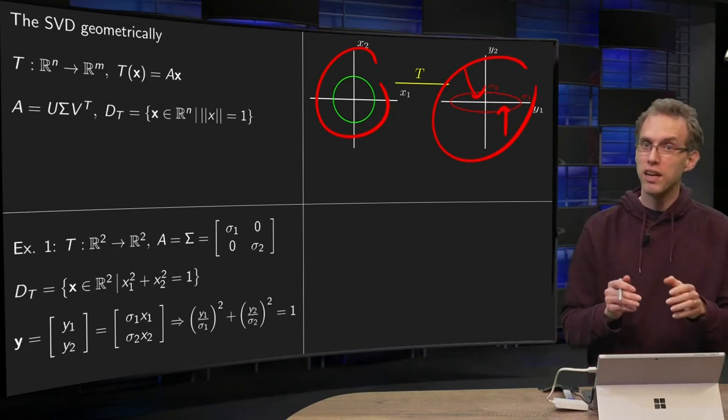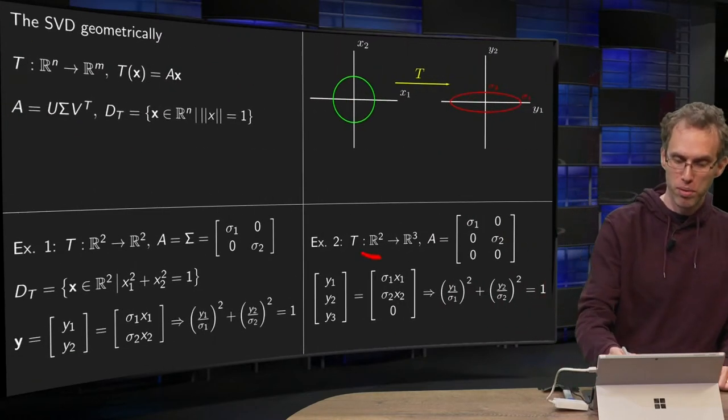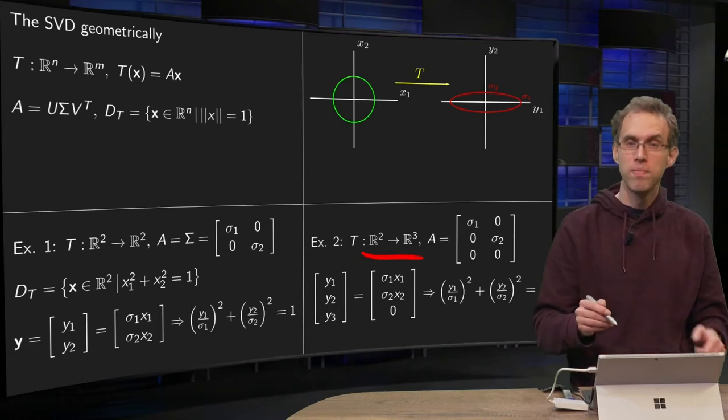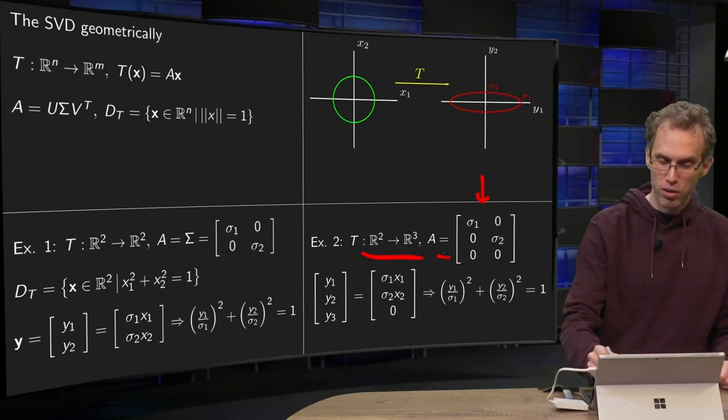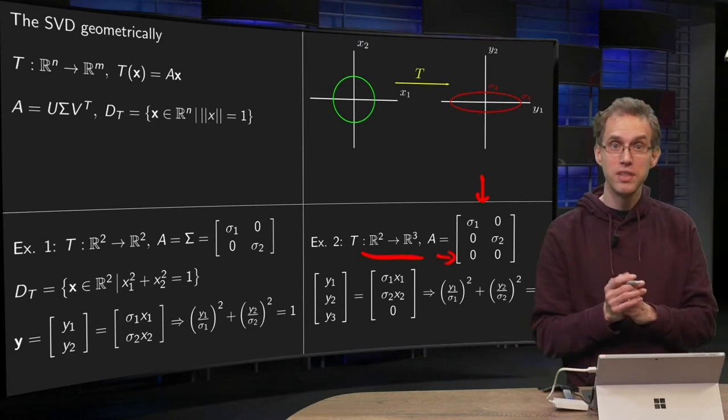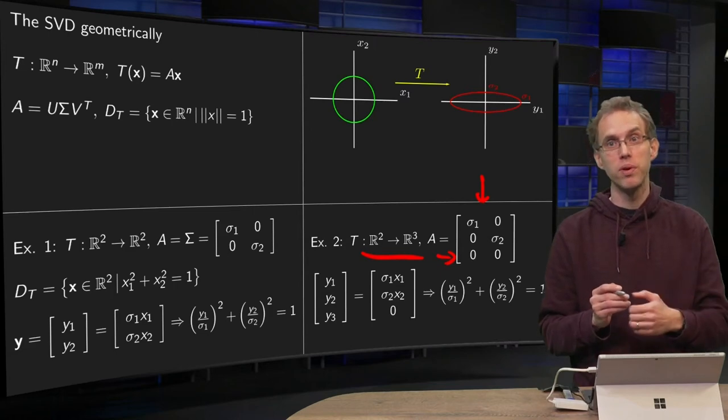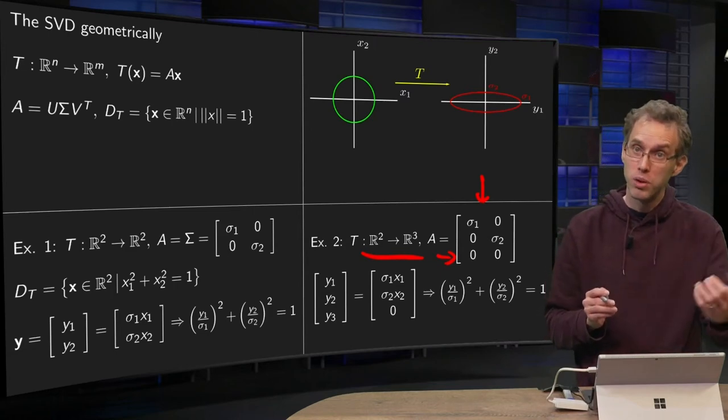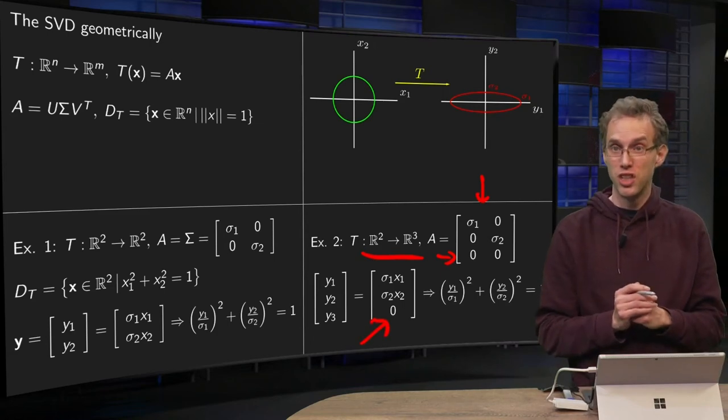Now let's see if we start with some non-square matrices. So what if we do, for example, from R^2 to R^3? Again the sigma_1, sigma_2 part, and then a row of zeros. What happens in that case? Well then again we have y_1 = sigma_1 x_1, y_2 = sigma_2 x_2, but now y_3 = 0.